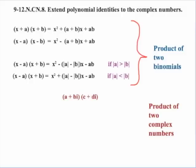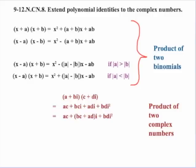Let's take the first identity — the product of two binomials. How does that relate to the complex numbers? The closest parallel would be if we take the product of two complex numbers. So we take one complex number, a plus bi, with a being the real part and bi being the imaginary, times a second complex number, c plus di. If we multiply those out using our distributive property, we notice that for the two middle terms we have i as a common factor, so we factor that out. Then we can simplify i squared to negative one, giving us minus bd for our last term.